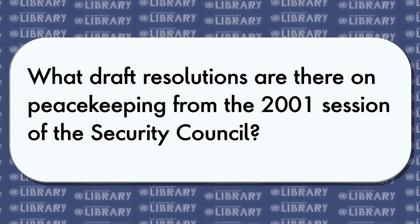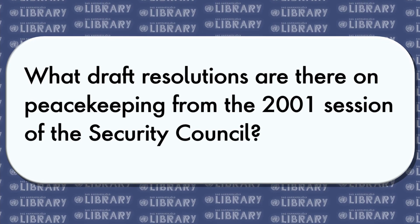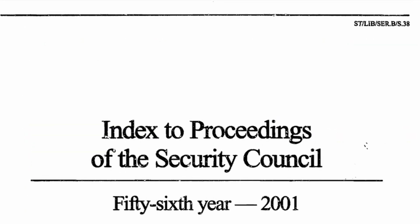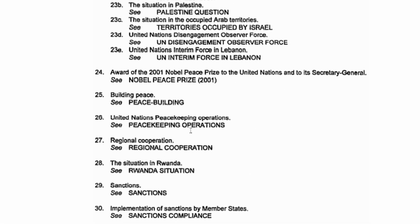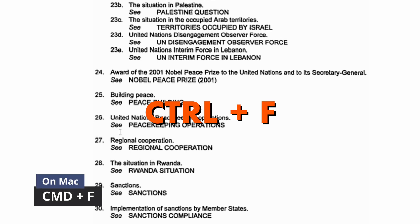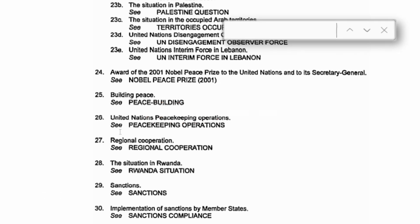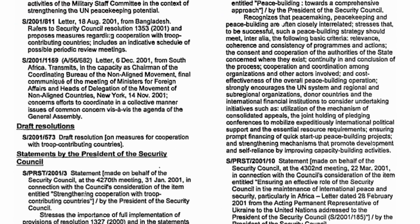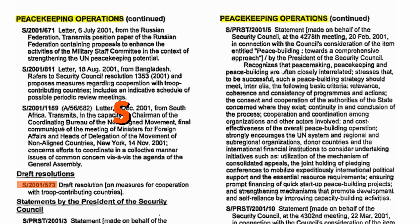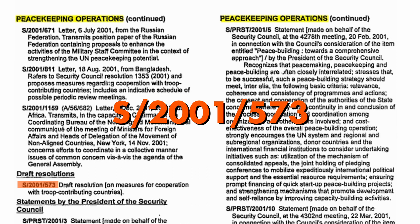What about finding draft resolutions in the Security Council from 2001 related to peacekeeping? First we can go search the 2001 Security Council ITP, then check the agenda for the proper subject's title. Under United Nations Peacekeeping Operations, we see a note that says "C Peacekeeping Operations." So now we'll go through the subject index to find that particular section. An easy way to navigate this would be to hit Control+F on your keyboard, which will bring up the find feature in your browser, and then proceed to type "peacekeeping operations." Here we'll see all the documents that fall under this subject, and if we scroll down, we should find draft resolution S/2001/573 concerning measures for cooperation with troop contributing countries.